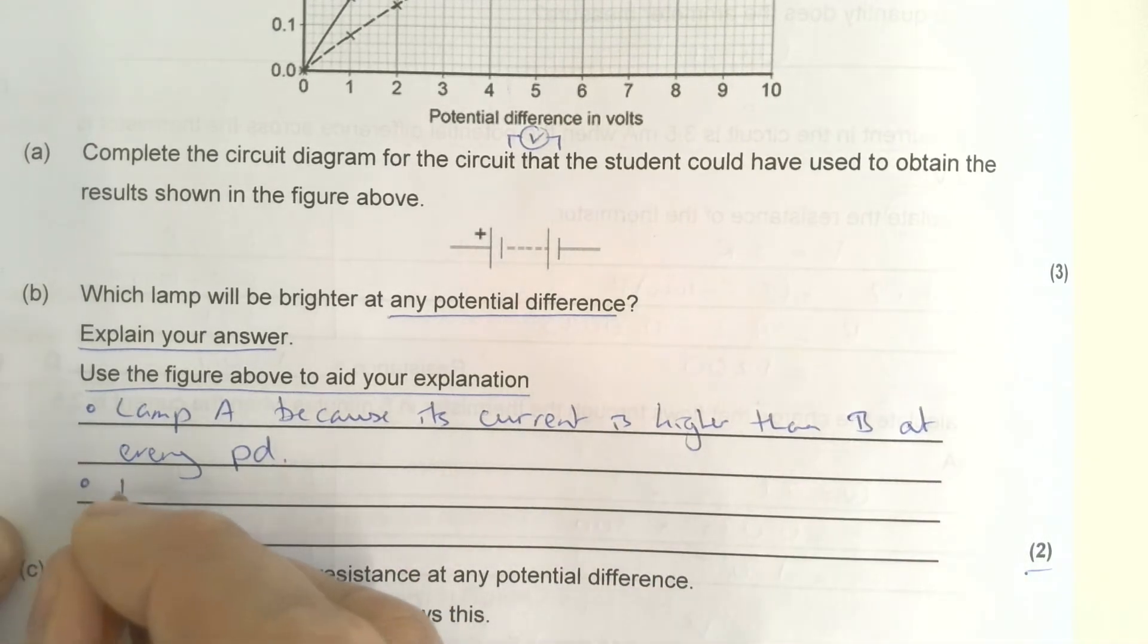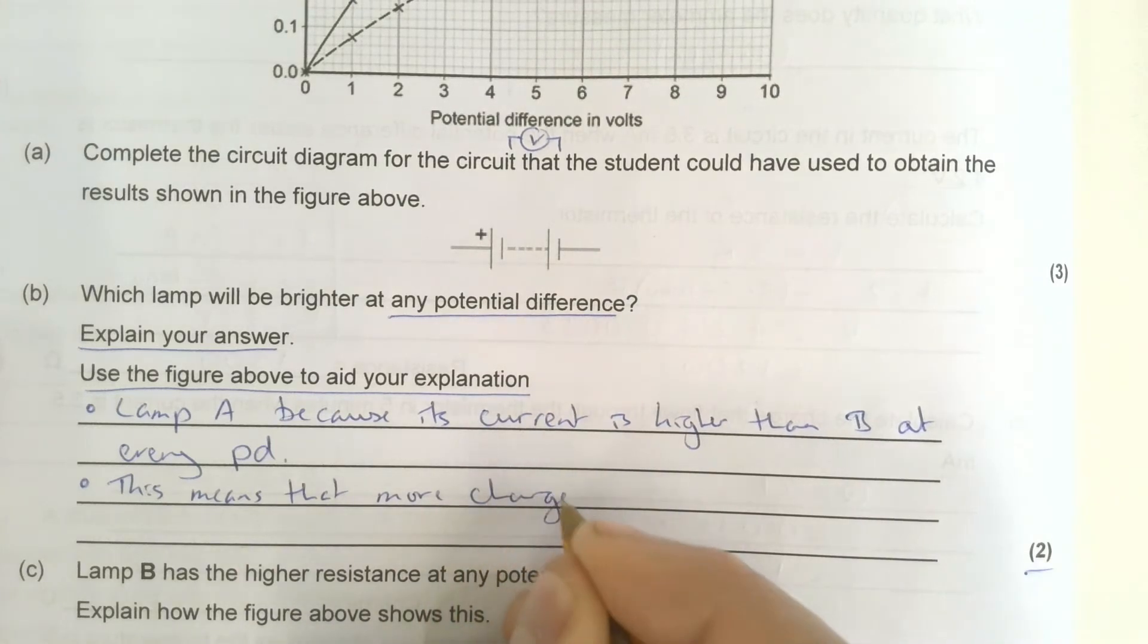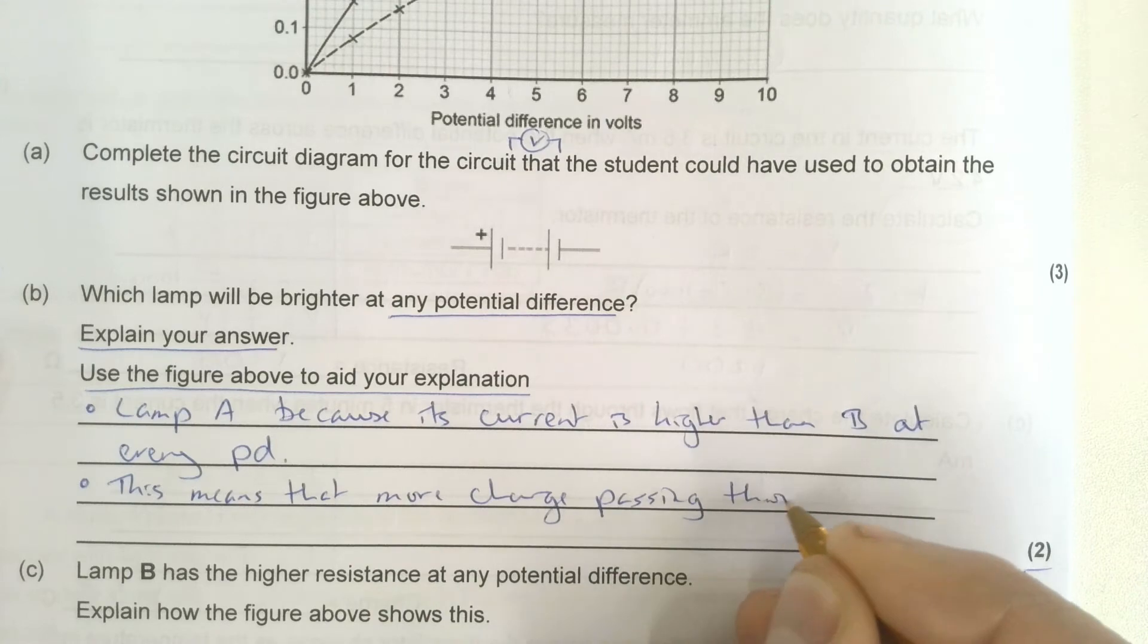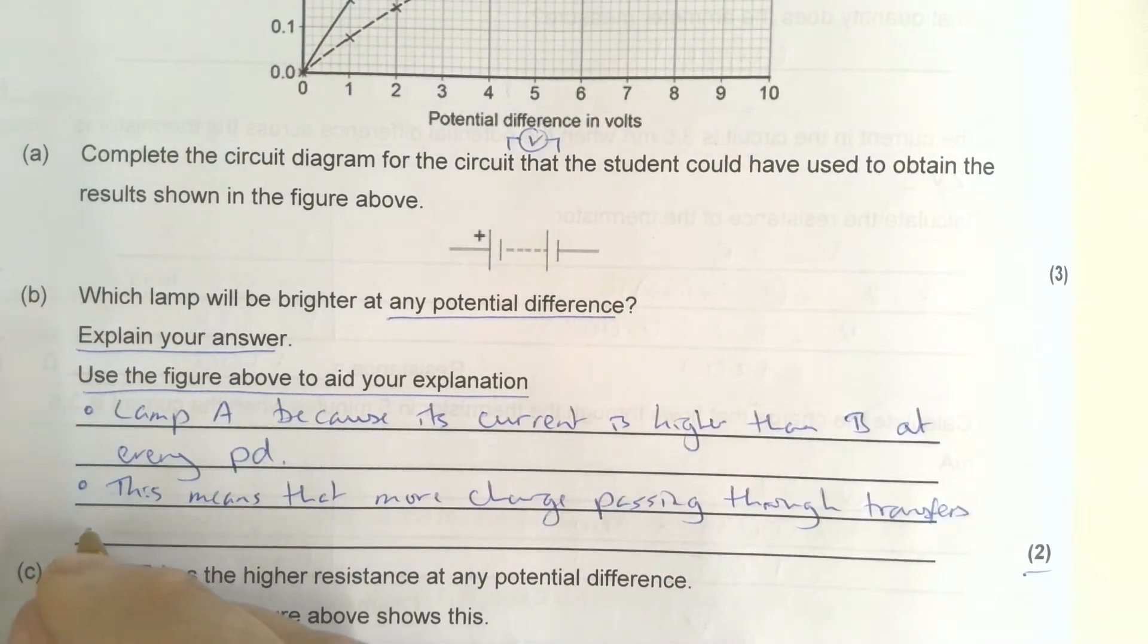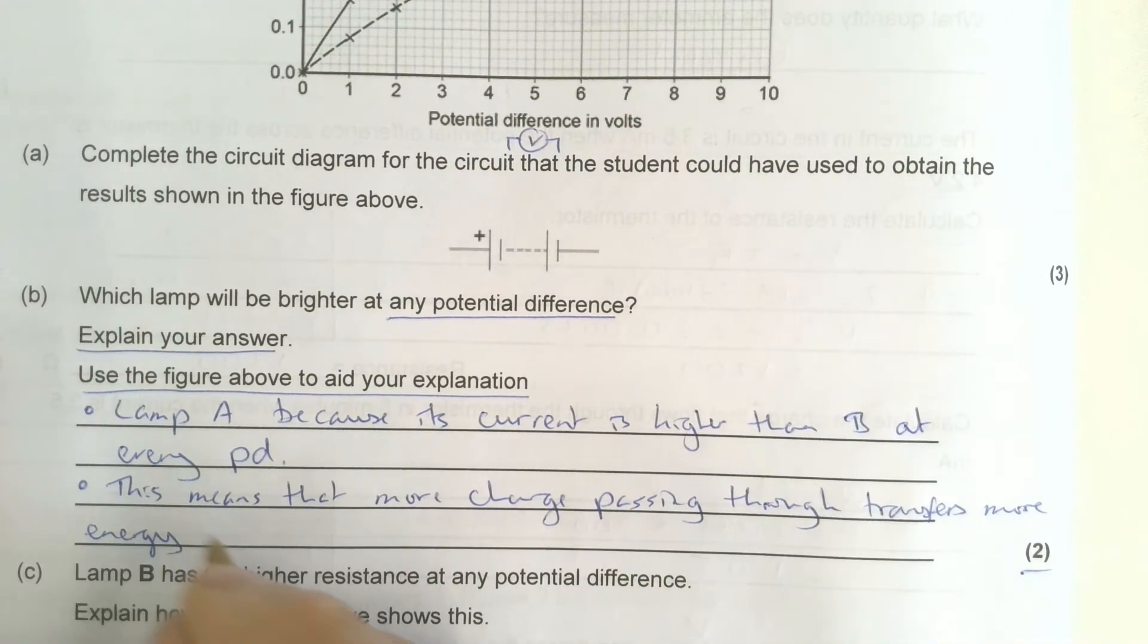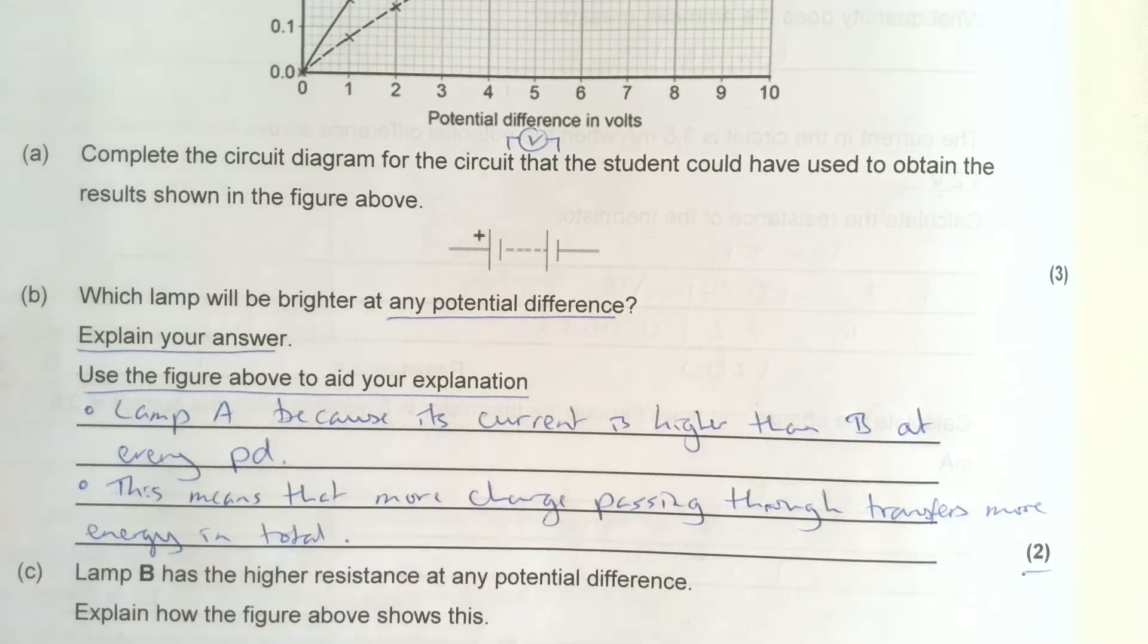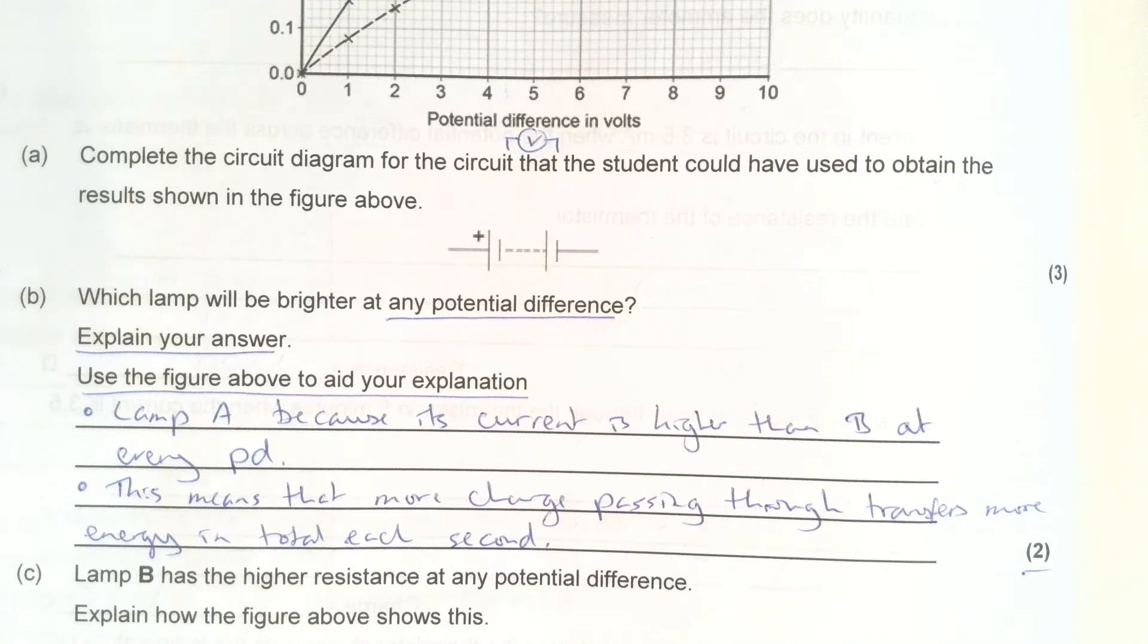I need to explain why that is. Because current higher than every PD, this means that more charge passing through transfers energy, transfers more energy in total each second. Careful with that, transfers more energy, because obviously I could transfer lots of energy over a long period of time. It's the amount each second that's important. That's the power of the bulb, the power of the light. Otherwise you'd give a really dim light and just leave it on for ages and ages.